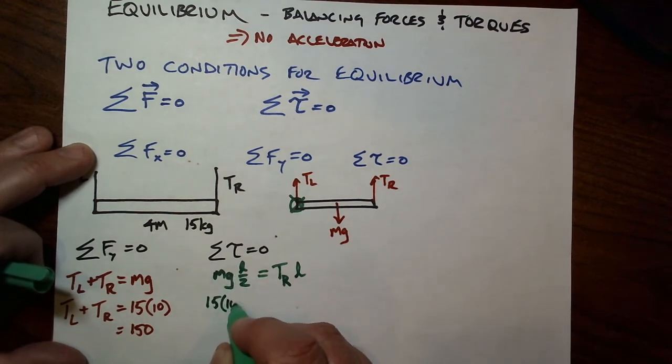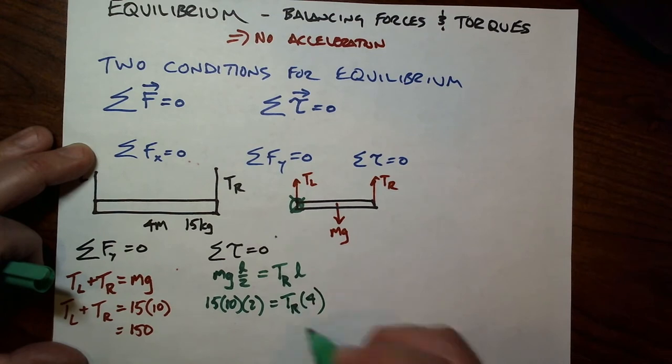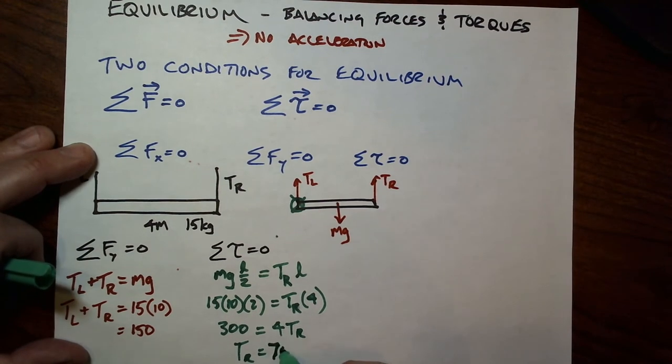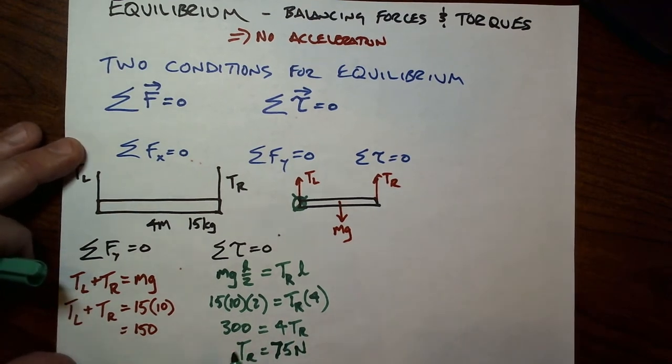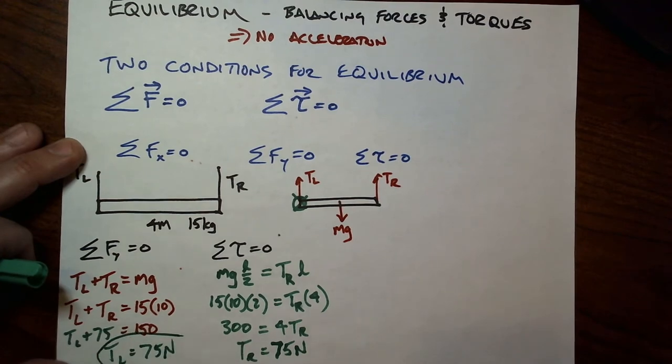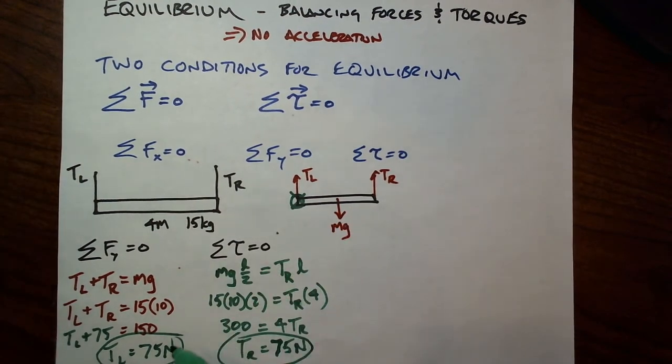So this is actually great because we have all these numbers. We have 15, 10, and 2 is half of the length of the thing. And over here we have TR times 4. So this is 300 equals 4 times TR, or TR equals 75 Newtons. All right, so there's more tension in the right-hand rope, which we kind of expected. And we can plug this back in over here to get that TL plus 75 must be equal to 150. So TL must also equal 75 Newtons. And that's not really that earth-shattering, because I think we all suspected that these two ropes would have equal force in them, and they would support the weight of the plank, which is 150. But we could use this same technique to solve a much more intricate problem.